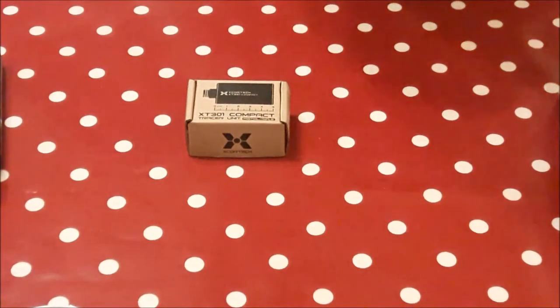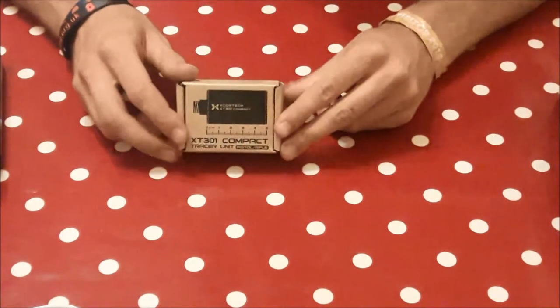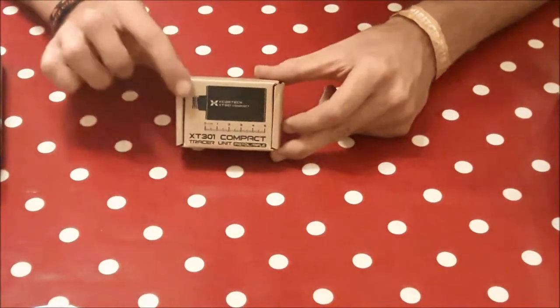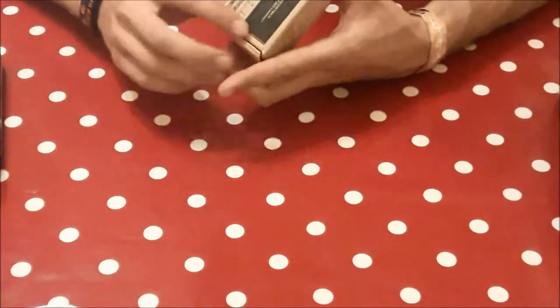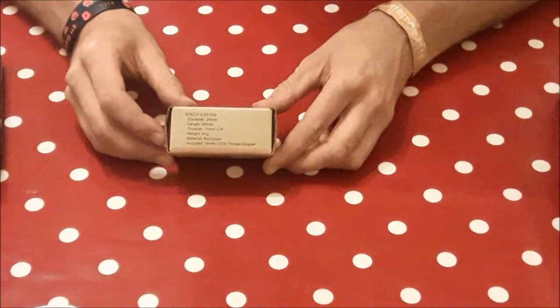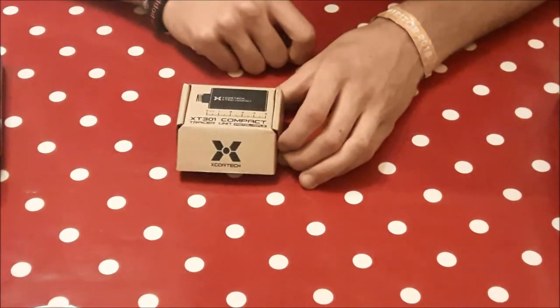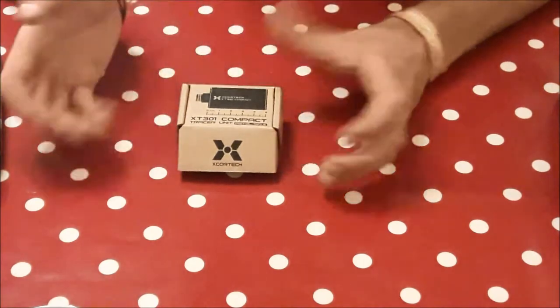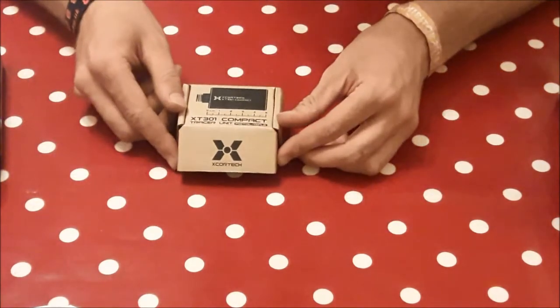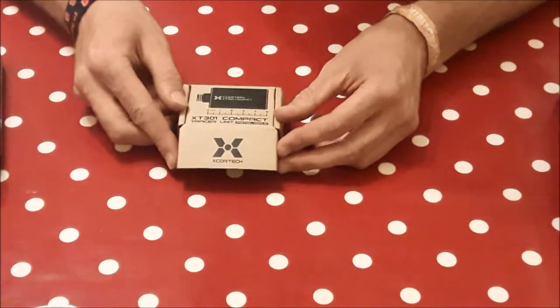Hello everybody, this is my review on the new XT301 Compact Tracer unit by Xcortec. It comes in a neat little box with the specifications on the front, showing that it's 50mm long, so that it's compact. It is for a pistol or a rifle but ideally suited to a pistol.